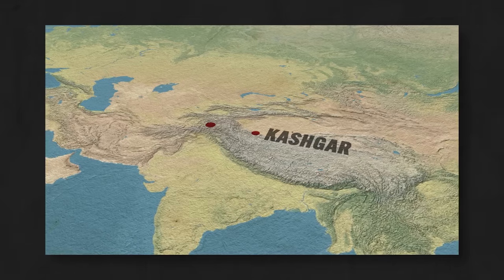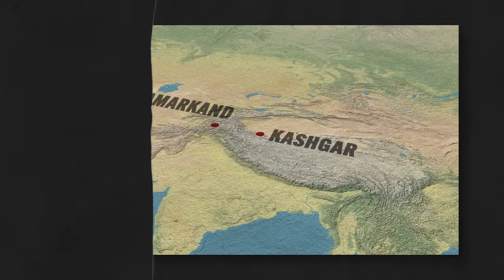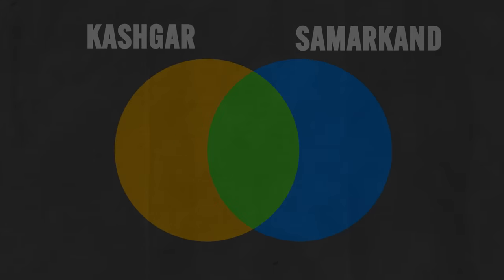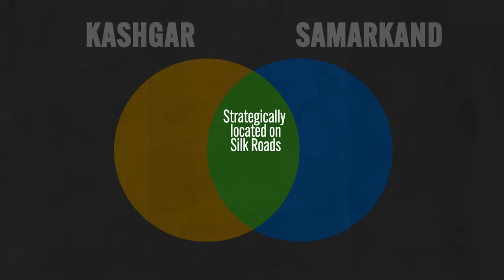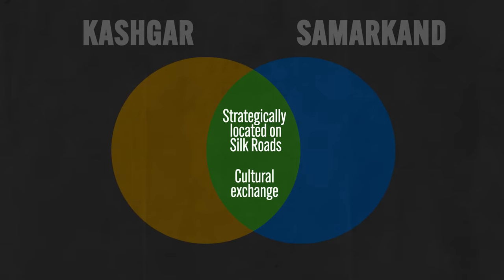The second city to know is Samarkand, in Central Asia. It was strategically located at the convergence of important trade routes on the Silk Roads, and as merchants from all over the world arrived there, profound cultural exchange occurred. Archaeologists have found relics from many different religions there, like Christianity, Zoroastrianism, Buddhism, and Islam.